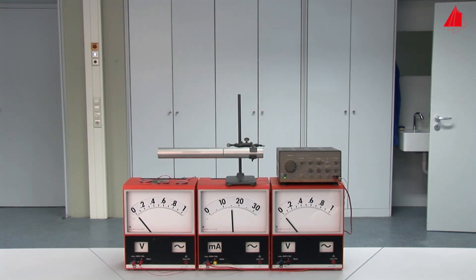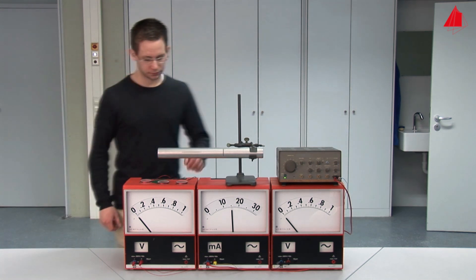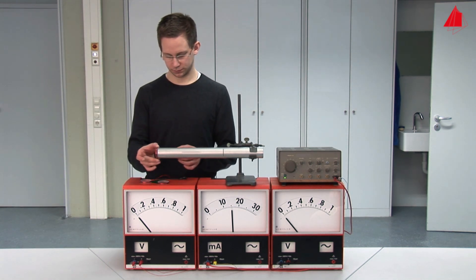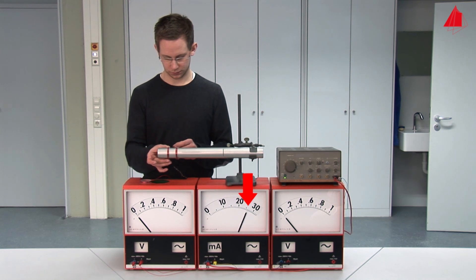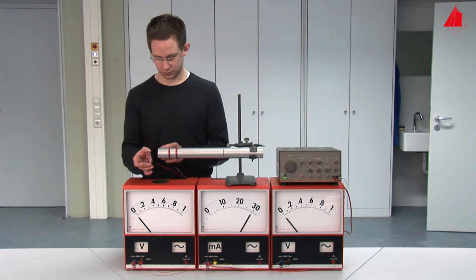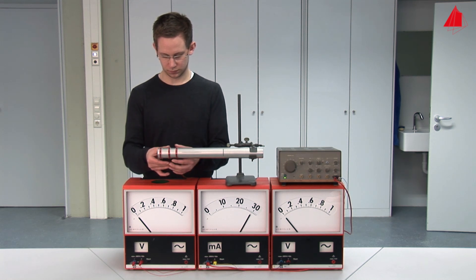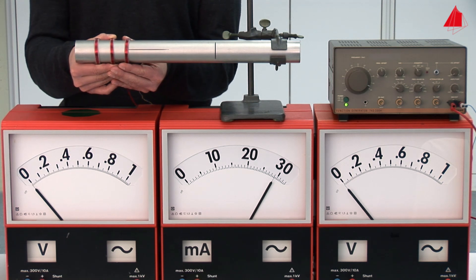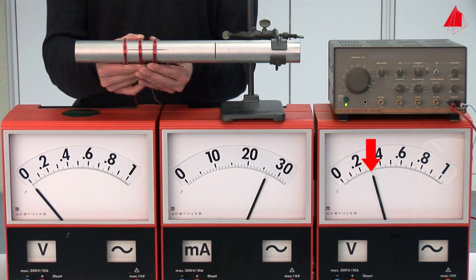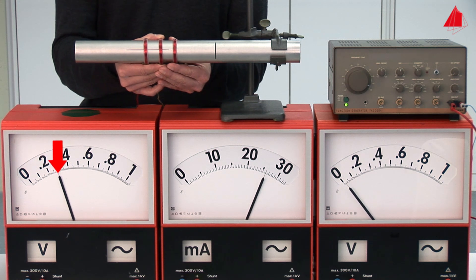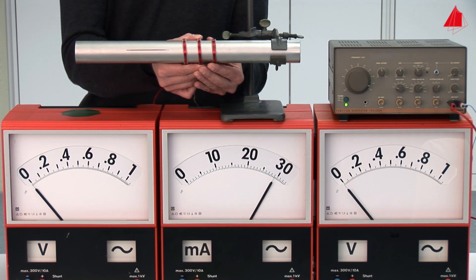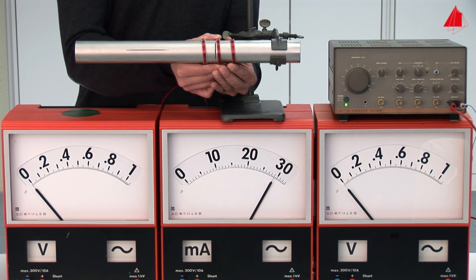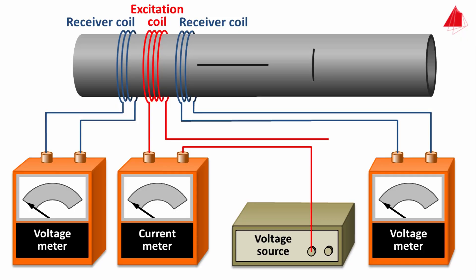The improved test arrangement has been set up in the laboratory and is now in operation, as can be seen from the current consumption of the excitation coil. The materials tester first places the right receiver coil over the tube, then the excitation coil — causing the current consumption to increase as in the previous test — and finally the left receiver coil. He then carefully moves all three coils to the right. The pointer of the right voltage meter deflects, then the pointer of the left voltage meter. In the intact region of the tube, neither voltage meter deflects. Unfortunately, the saw cut in circumferential direction is again not detectable.